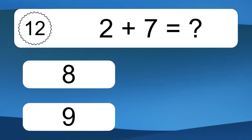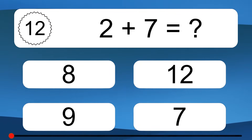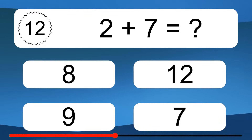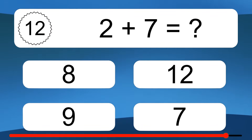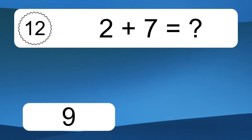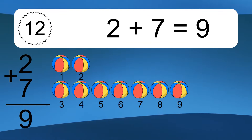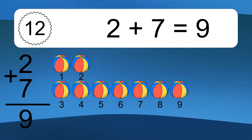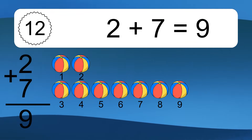2 plus 7 equals what? 2 plus 7 equals 9. Let's count it. 1, 2, 3, 4, 5, 6, 7, 8, 9.